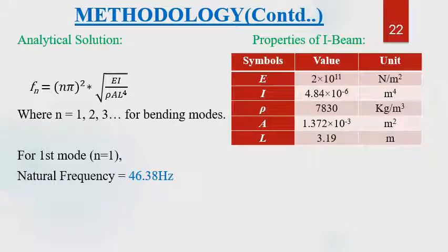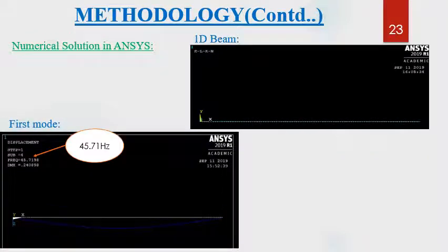Theoretically, the natural frequency of the beam was calculated using the differential equation by substituting the values of beam properties, and it came out to be 46.38 Hz. Numerical analysis was also done using ANSYS with the Beam 188 element. The beam was plotted in ANSYS, followed by meshing, and modal analysis was performed. The first natural frequency came out to be 45.71 Hz.